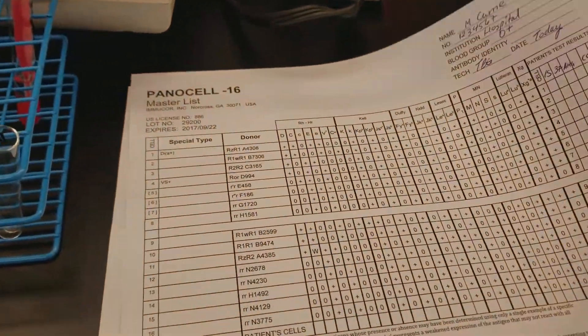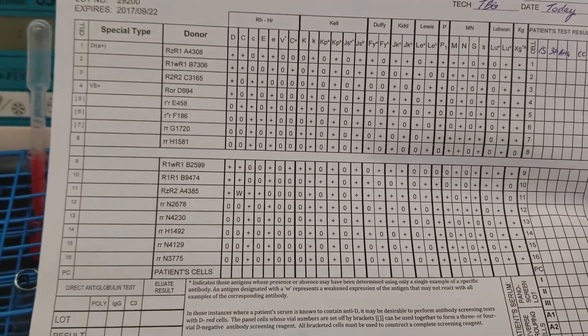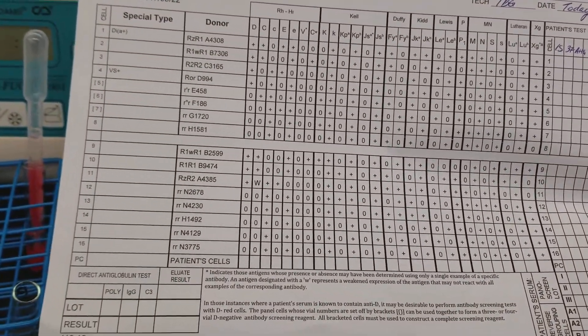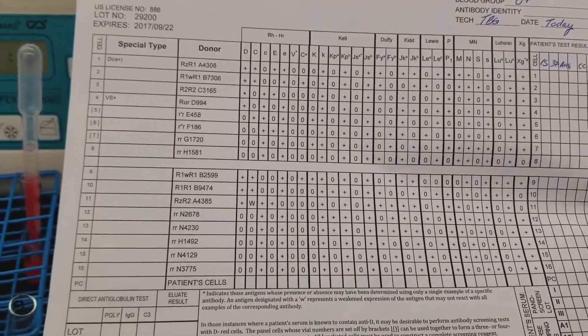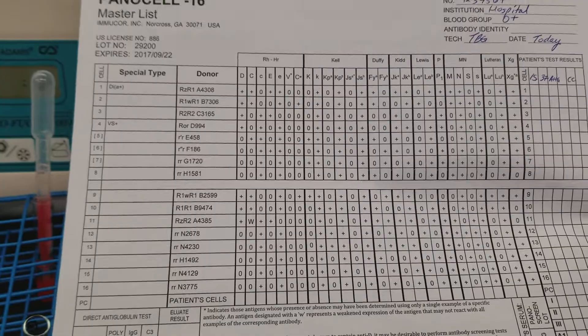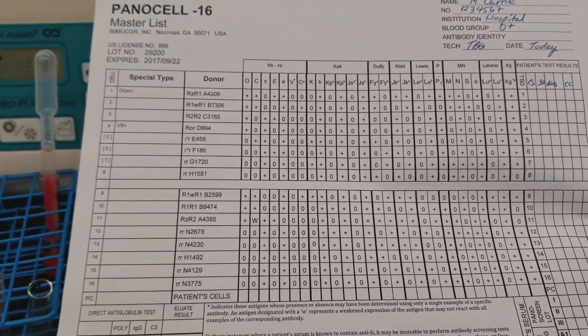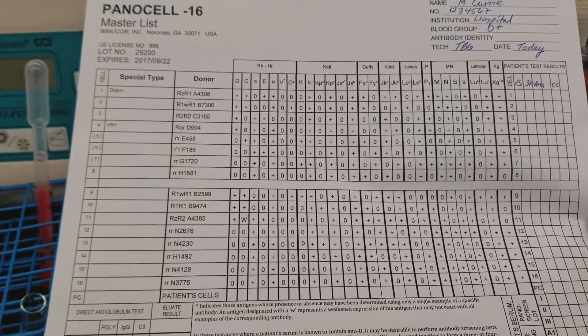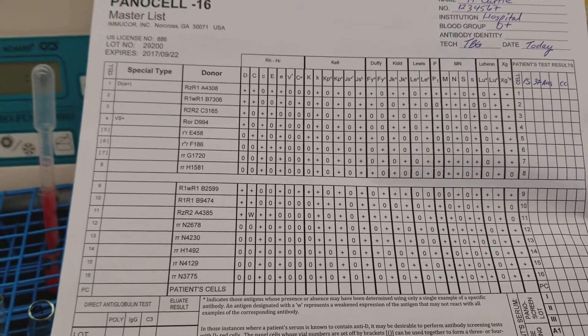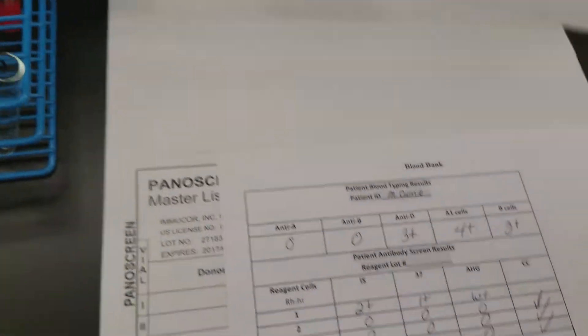We're back and we are doing an antibody identification panel. Usually we get a 10 cell panel but we've got a 16 cell panel, so this is going to be totally crazy because I'm going to have to use two centrifuges to do this all quickly. I'm going to try to make this not very long of a video because the explanations for a lot of this stuff you can find in the antibody screen video.